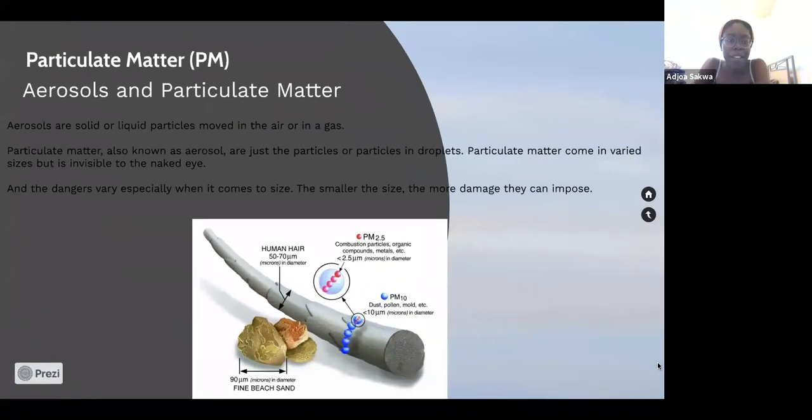Particulate matter can travel in aerosols and they can be in liquids or solids. They can come from certain activities from cooking, household products and stuff like that. They can be as small as dust, pollen, dirt, and they can get as large as a fine grain of sand.